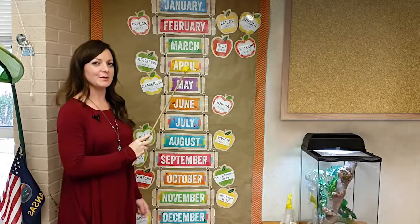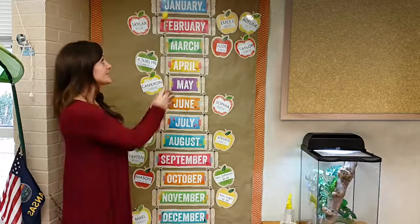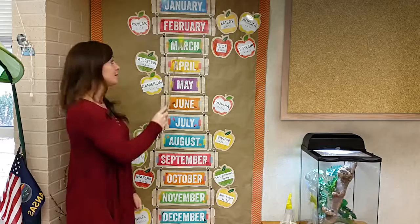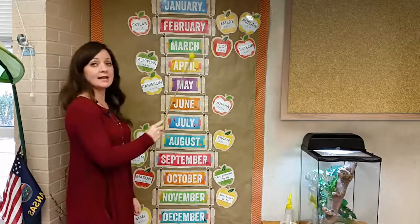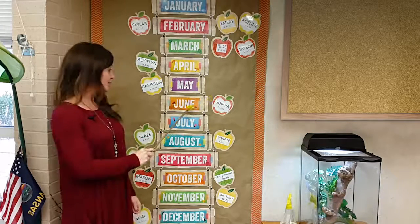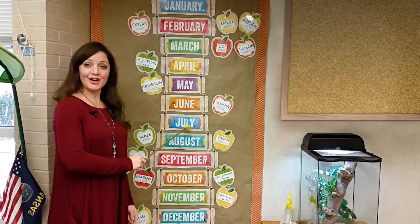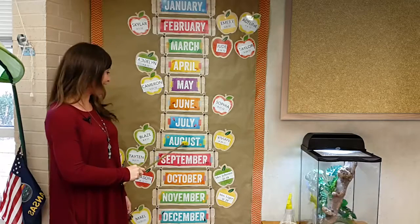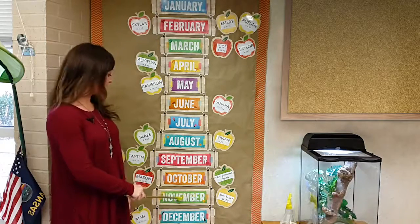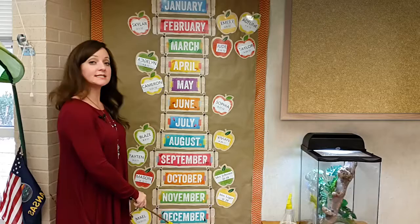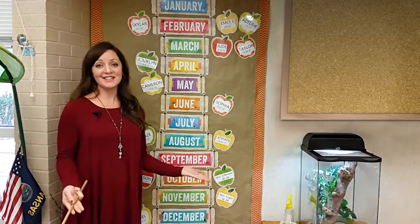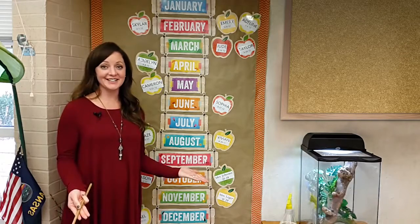So let me sing that song for you — it would go like this: January, February, March and April, May, June, July and August, September, October, November, December. These are the months of the year.